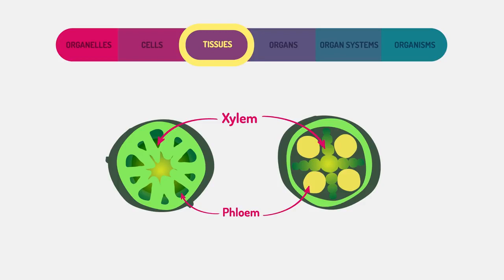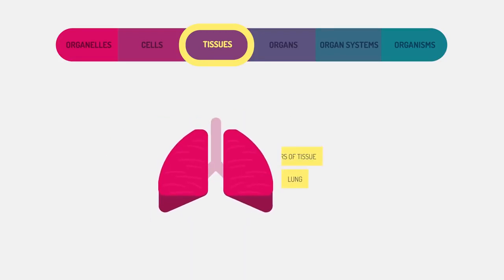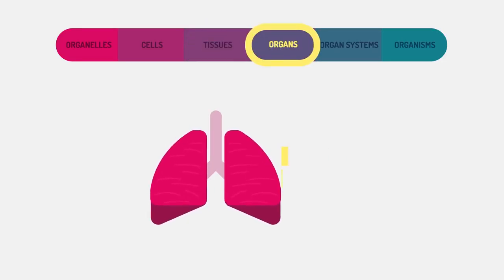When there are layers of tissue working together, they form an organ. Organs are specialized to carry out specific life processes. All animals contain organs.